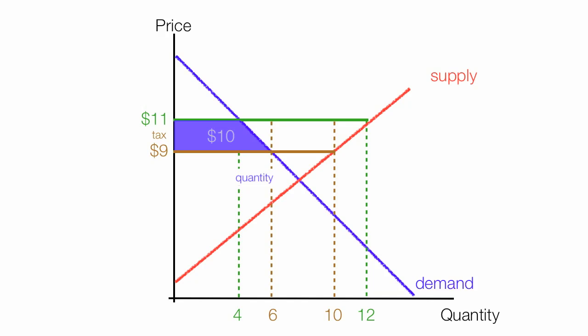Tax revenue is the brown rectangle. The height of the rectangle is $2 again, and the base is 4 units. That is $8; the area of that rectangle is $8.